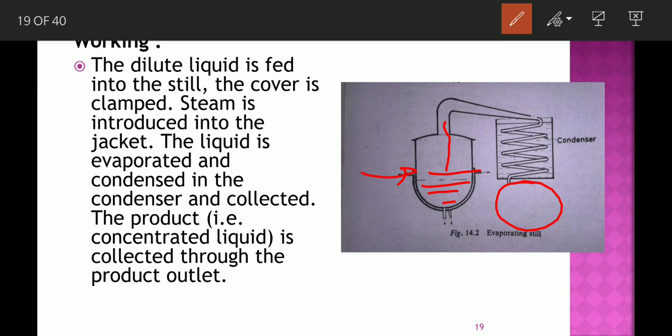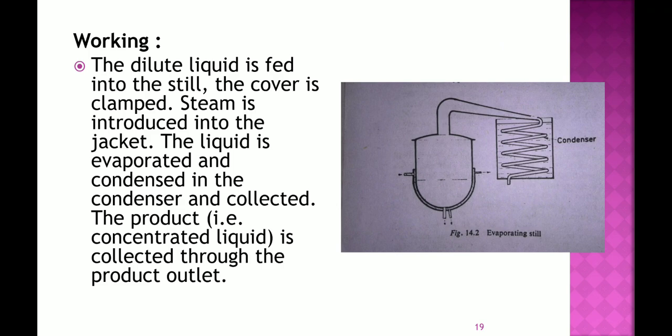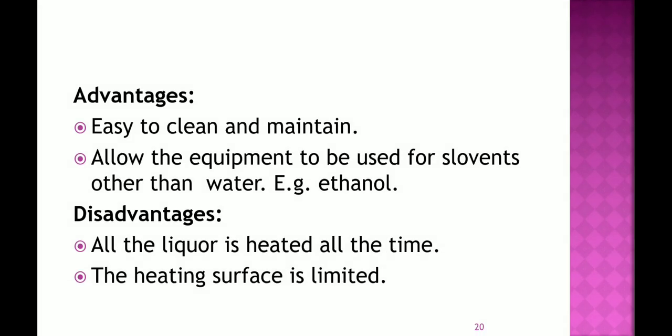The concentrated form of the product can be collected from this outlet, and the steam is condensed here. These are the workings of the evaporating steel. Now let's talk about the advantages of this evaporating steel.